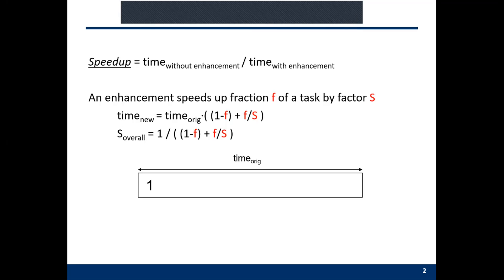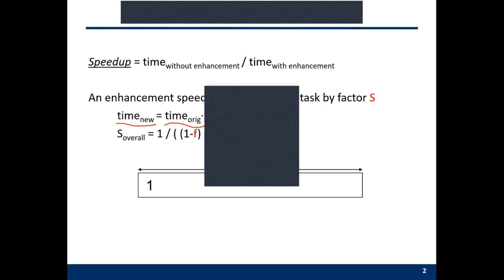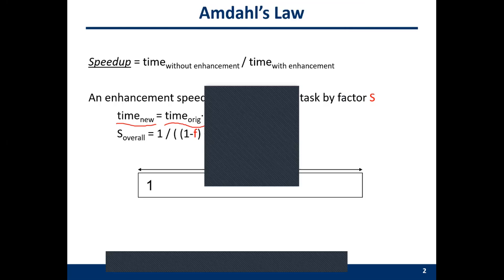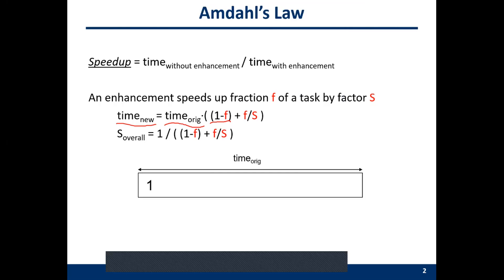Amdahl's Law is the most significant equation in computer architecture. It's very simple. Assume your technique can speed up a fraction F of a task by a factor of S. The new execution time will equal the original execution time multiplied by (1 minus F plus F divided by S).